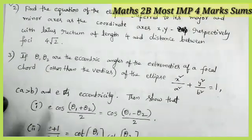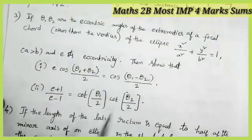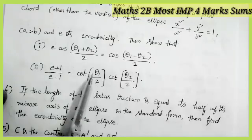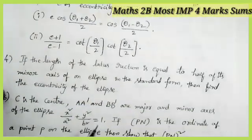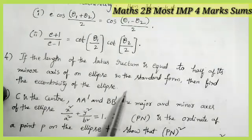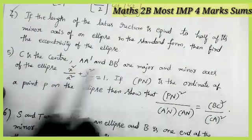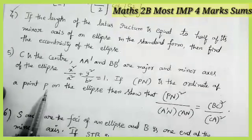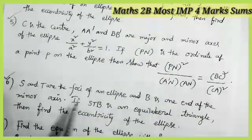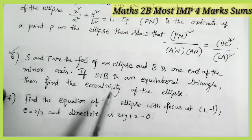If theta1 and theta2 are the eccentric angles at the extremities of a focal chord of the ellipse, then show that: e times cos((theta1 + theta2)/2) equals cos((theta1 - theta2)/2), and (e+1)/(e-1) equals cos(theta1/2) times cos(theta2/2). If the length of the latus rectum equals half of its minor axis, find the eccentricity — most important. C is the center and PN is the coordinate of a point on the ellipse — show the given result. If S and T are foci of an ellipse, P is one end of the minor axis, and SPT is an equilateral triangle, then find the eccentricity — most important question.